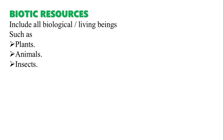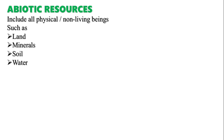Abiotic is just the opposite of biotic. Whereas biotic refers to living beings, abiotic refers to non-living things. Abiotic resources include physical things such as land, minerals, soil, water, and climate. These are the various abiotic resources.